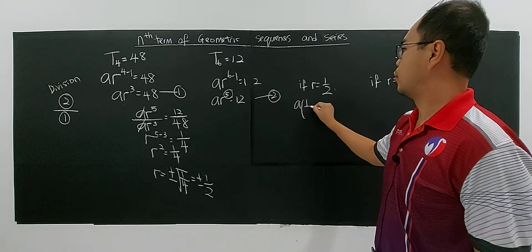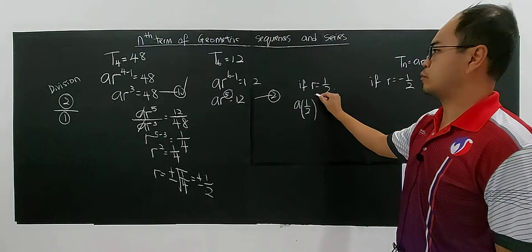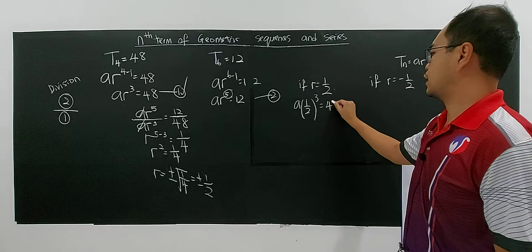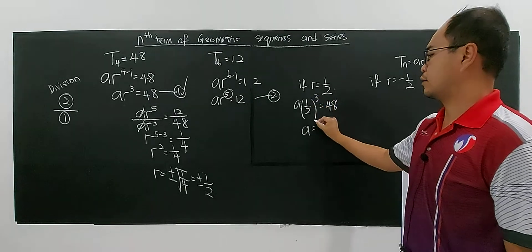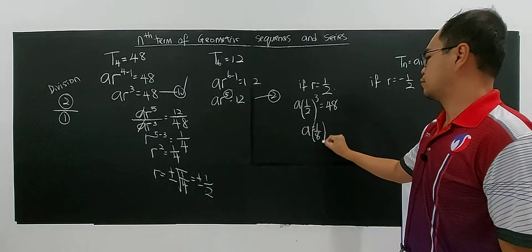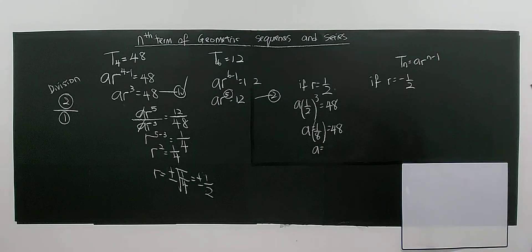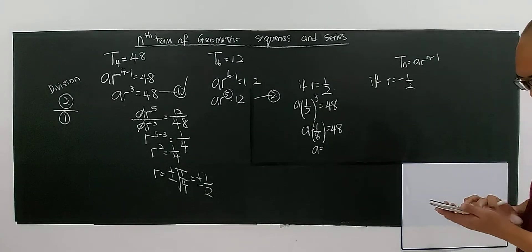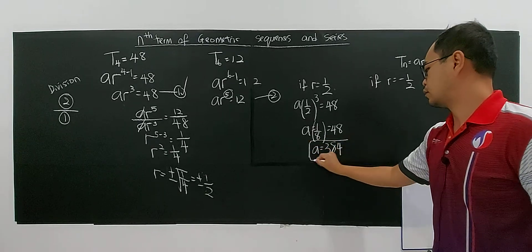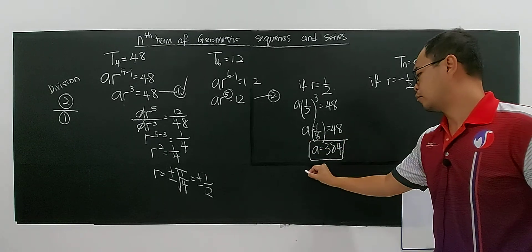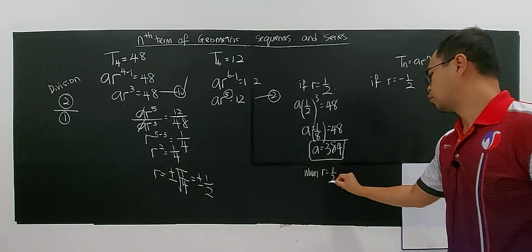For r = 1/2, I substitute into equation 1. So a·(1/2)³ = 48. The value will be a·(1/8) = 48, so a = 8 × 48 = 384. So a = 384 when r = 1/2.